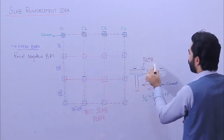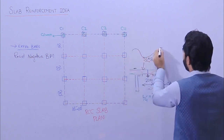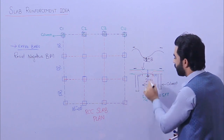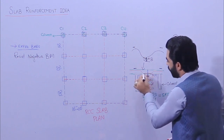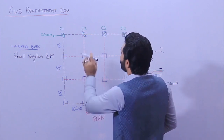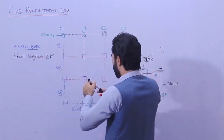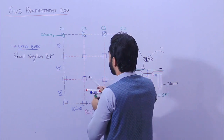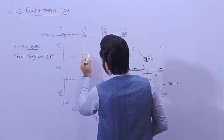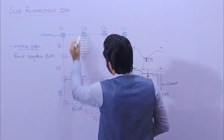Let me show you a diagram. The bending moment diagram goes like this — here we have negative bending moment and here we have positive bending moment. For positive bending moment we shape the steel like this, and for negative bending moment we bend the bar and provide the steel rod like this. At the distance of L/4 we are providing bent-up bars or extra steel rods. You can provide extra steel rods with a spacing of 6 inches or 8 inches.